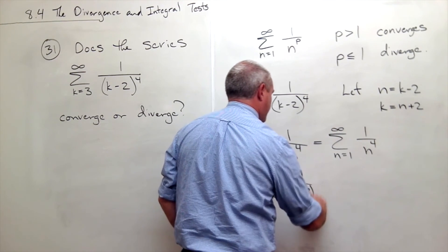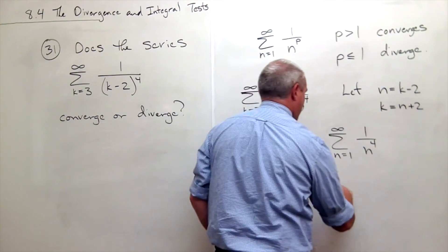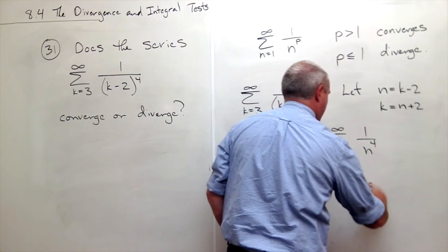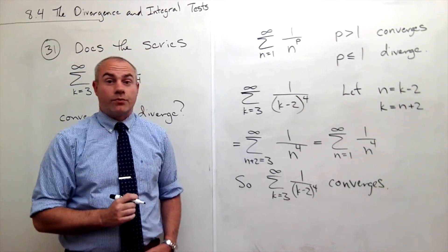So sum k going from 3 to infinity of 1 over (k minus 2) raised to the 4th converges. And we are done.